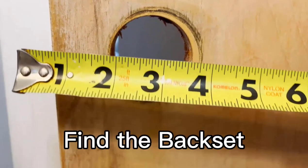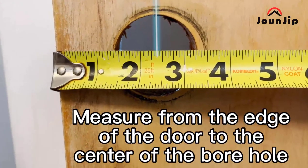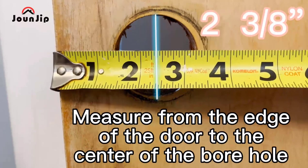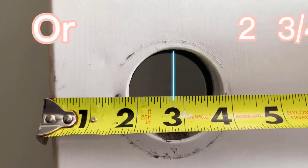Number three: find the backset. Measure from the edge of the door to the center of the borehole. It will be either two and three eighths or two and three quarters inches.